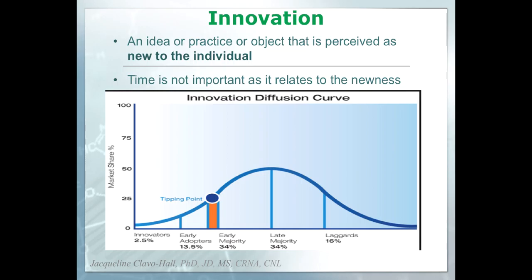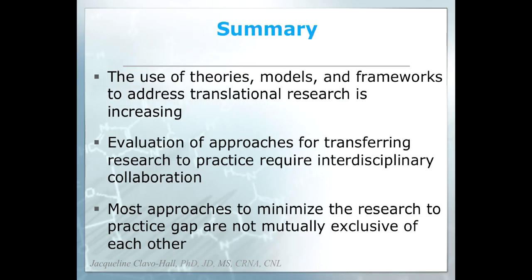While the Bronson textbook focuses primarily on the Rogers model for diffusion of innovations, the White textbook in the next presentation shows there are several other frameworks and models that can be used to consider how an intervention or new practice gets diffused throughout an organization. Looking back at the Bronson chapters, the authors stress that more and more we are seeing the use of theories, models, and frameworks in translational research, showing maturity in the field through these standardized approaches.